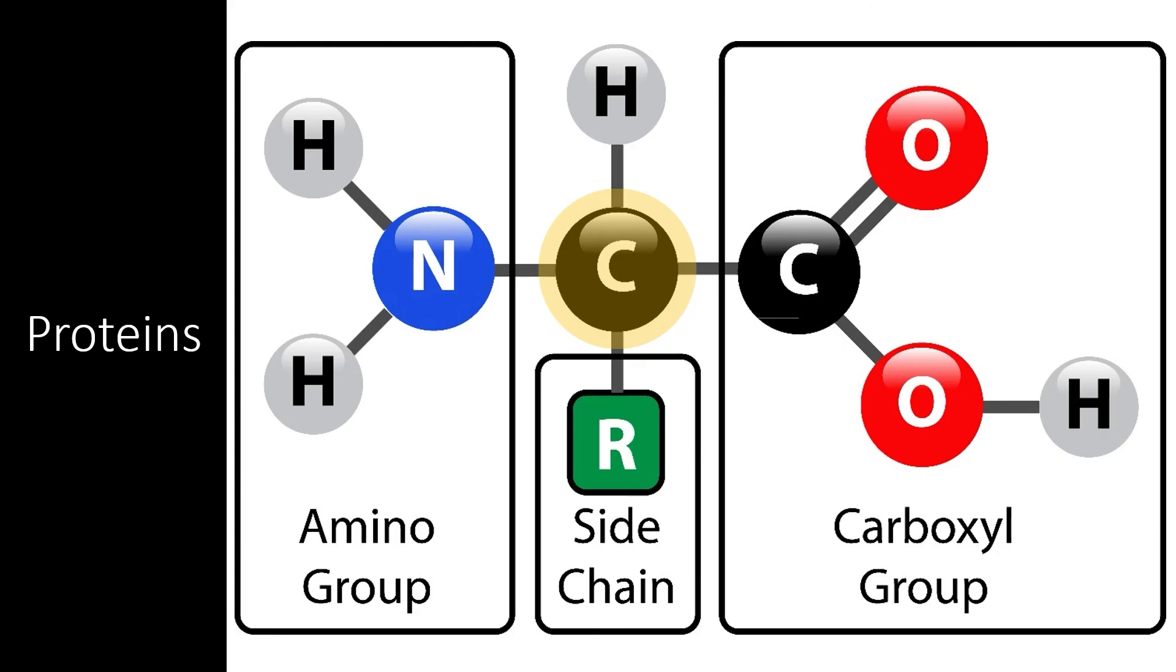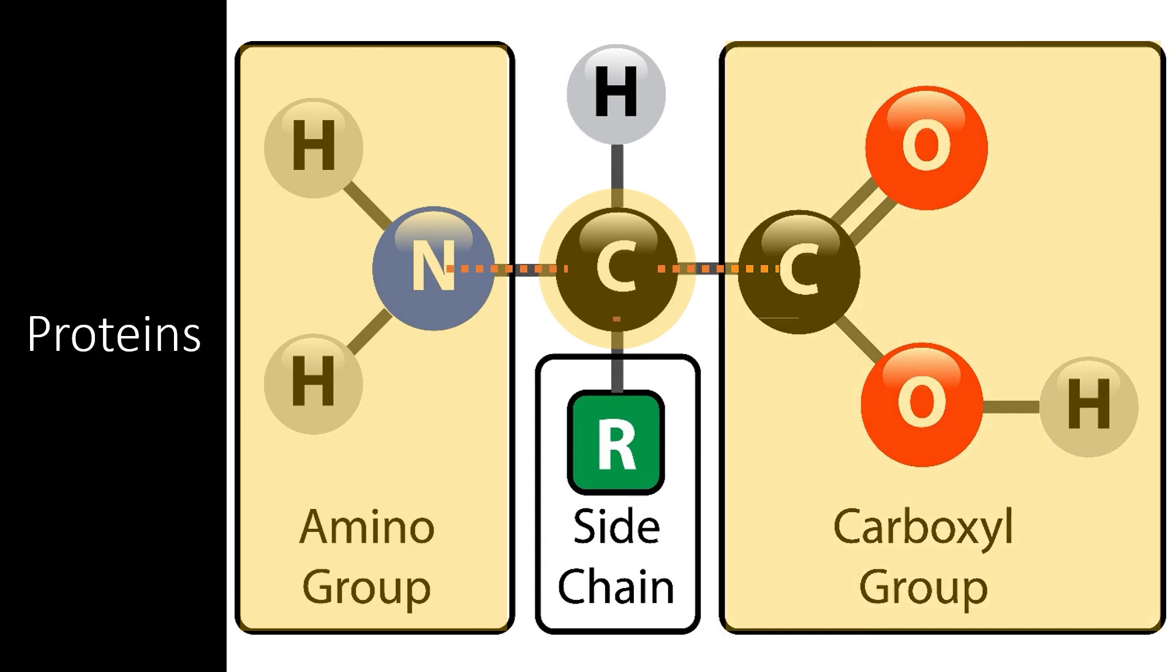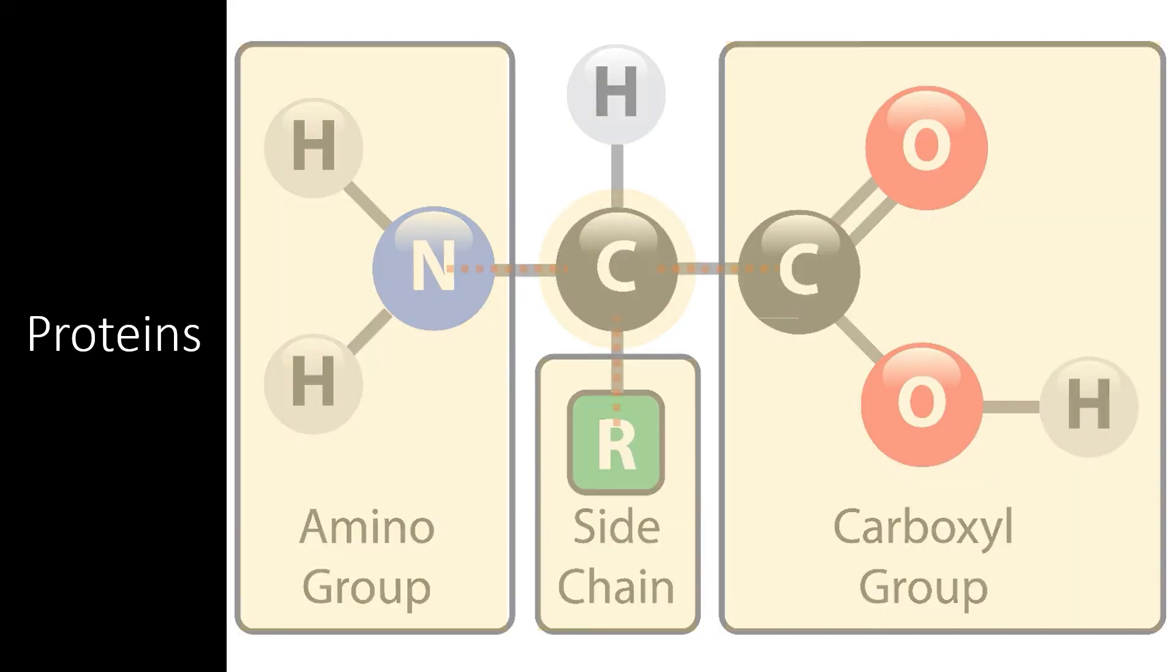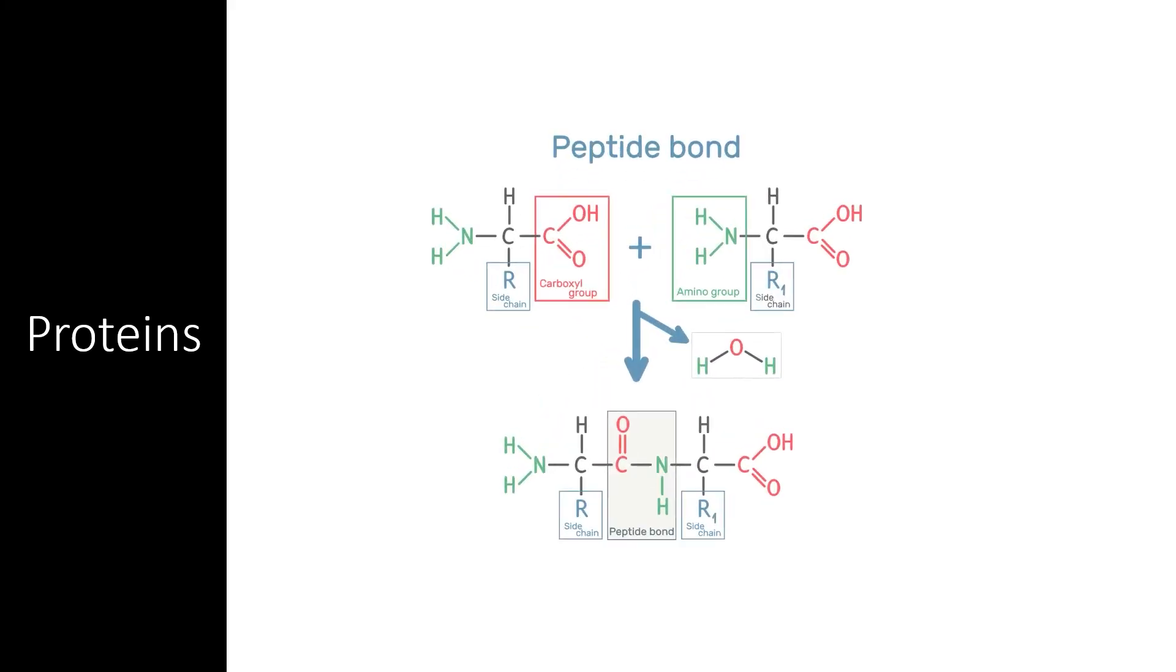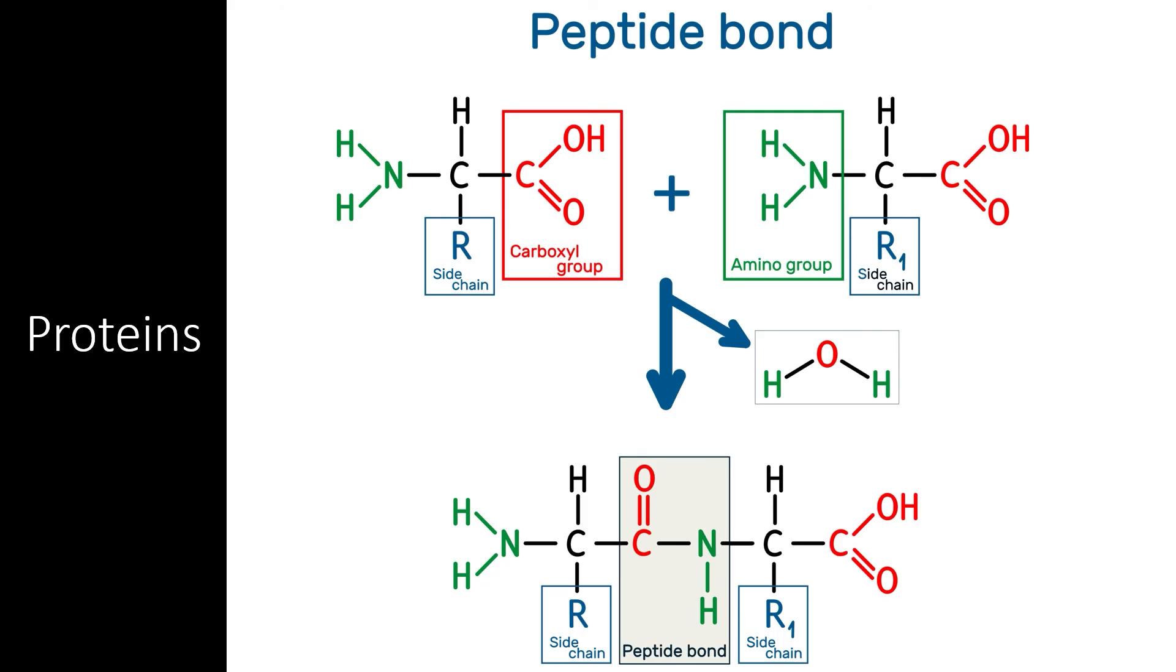Proteins themselves are built out of monomers known as amino acids. All amino acids have the same basic structure: a central carbon bonded to an amino group, a carboxyl group, and a side chain, or sometimes called an R group. Amino groups can bond directly to carboxyl groups in a dehydration reaction, while the side chains are responsible for giving each amino acid specific properties.